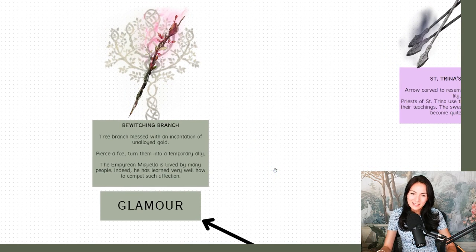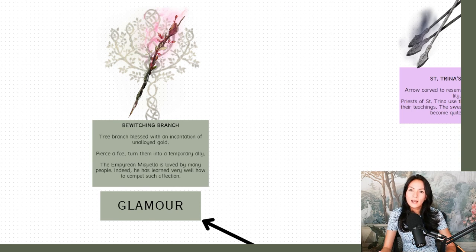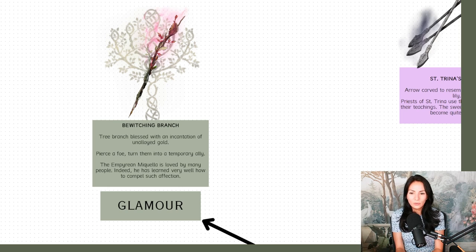Another thing about fairies is that fairies have a spell called glamour. And glamour is a fairy's ability to bewitch someone to seeing something that they want or disguising themselves. The bewitching branch says that if you pierce a foe, it turns them into a temporary ally. The Empyrean Miquella is loved by many people. Indeed, he has learned very well how to compel such affection. Why would Miquella know how to do this? Because that's a glamour spell.